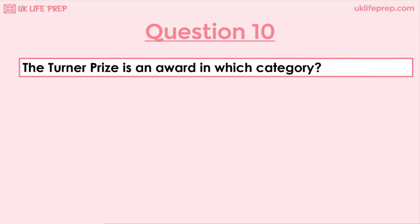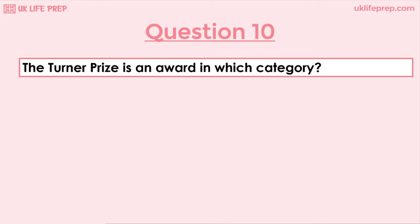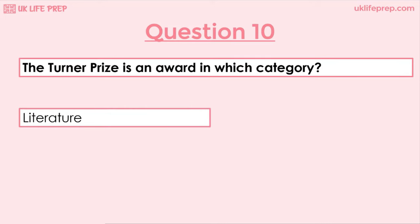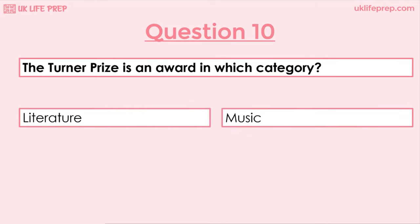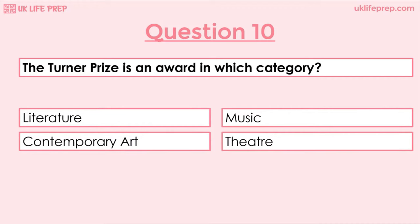Question 10: The Turner Prize is an award in which category? Literature, Music, Contemporary Art or Theatre? The correct answer is Contemporary Art, and the prize is named after Joseph Turner, a famous artist.